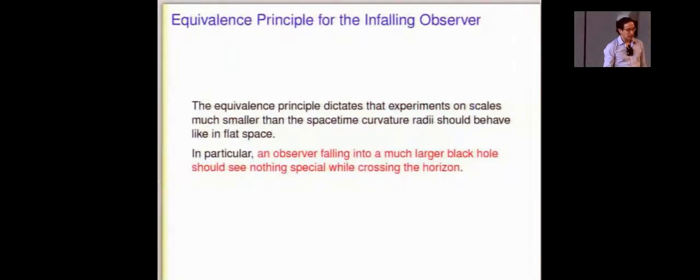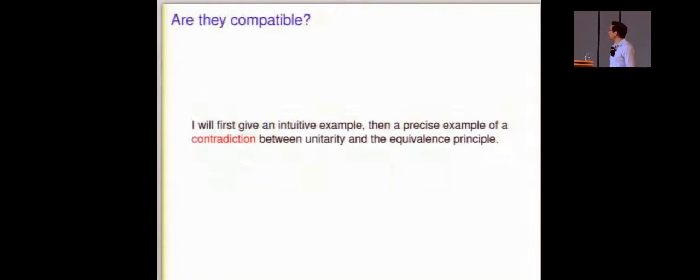To a relativist, things are a little more confusing because the equivalence principle dictates that experiments on scales much shorter than the horizon experience nothing special that you should observe the same stuff that they would see in flat space at the time when an in-falling observer crosses the horizon. This could be a black hole that's a billion light years across, so you would have a billion years to live after you cross the horizon. We could be crossing it right now and not know anything about it.